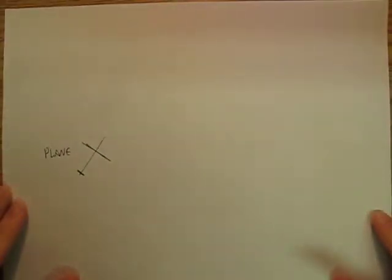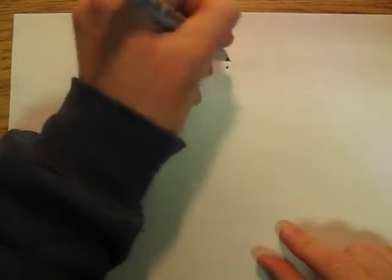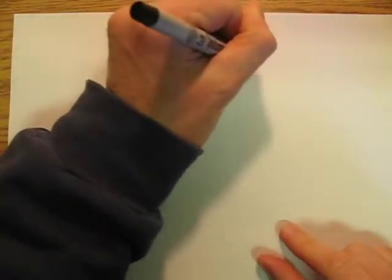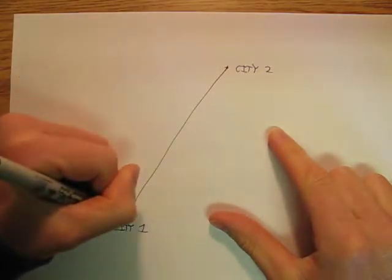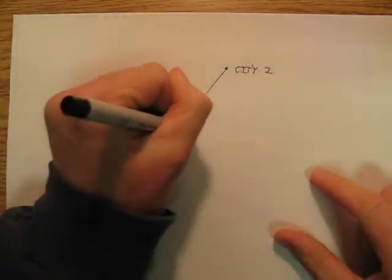So suppose we got a plane. Now let's just start off with a fresh sheet of paper. We got two cities, we got a city there and we got a city here. And we know that these cities are let's say 100 kilometers apart.